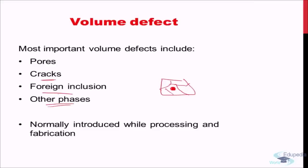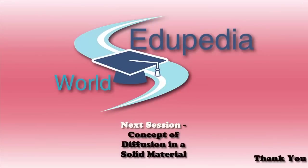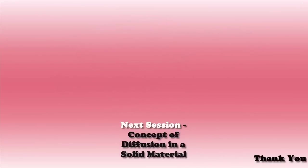This brings us to the conclusion of the lecture series introducing the concept of imperfections in solids. Understanding different types of imperfections is fundamental to understanding how the properties of a material vary, and how we can tweak material properties by introducing different kinds of imperfections. In the next lecture, we will start a new topic: the concept of diffusion in a solid material.